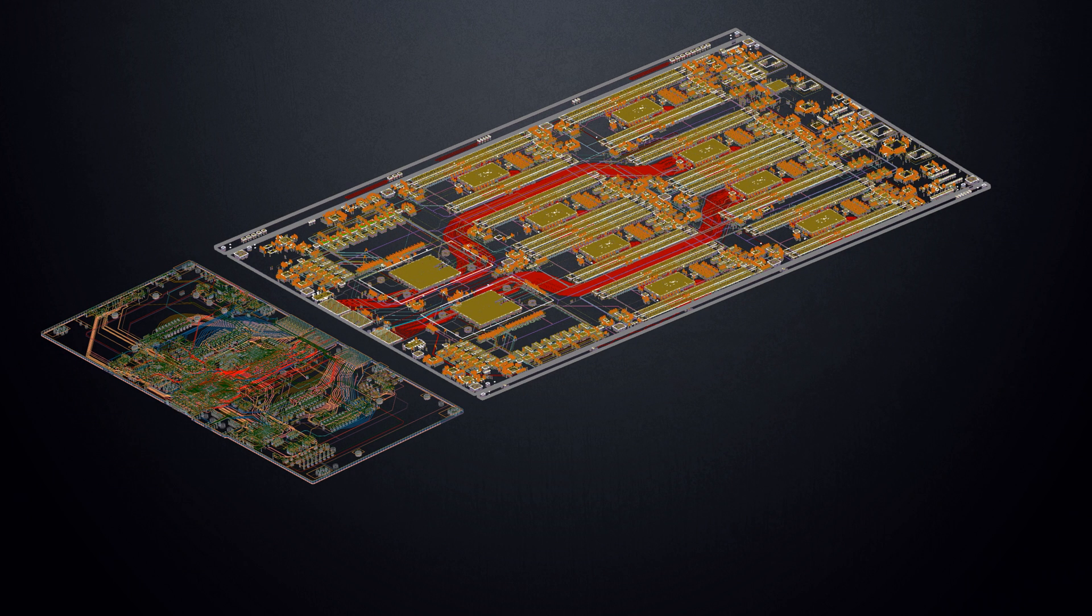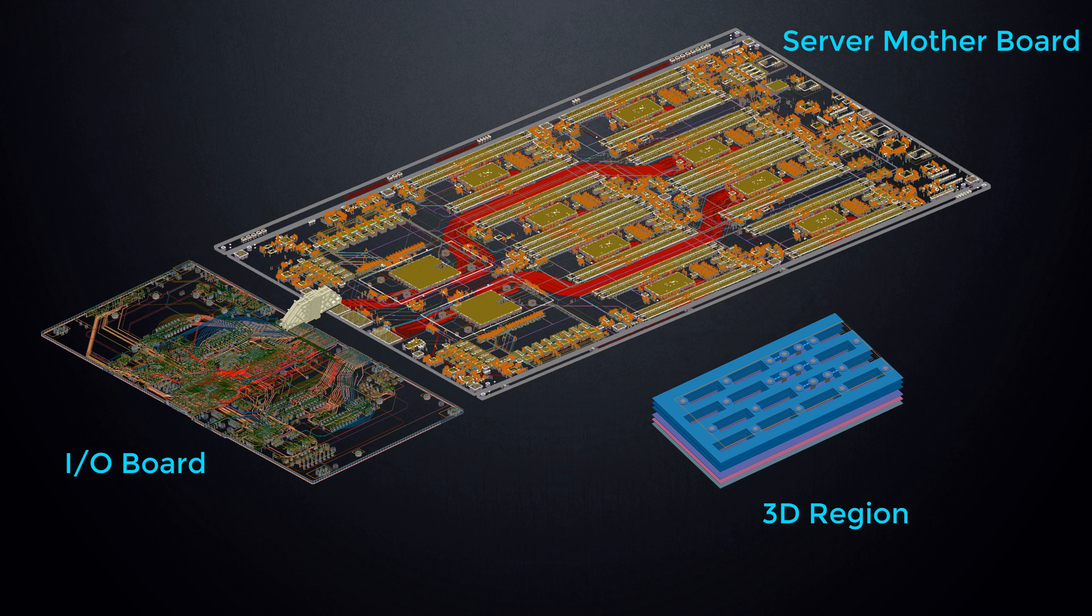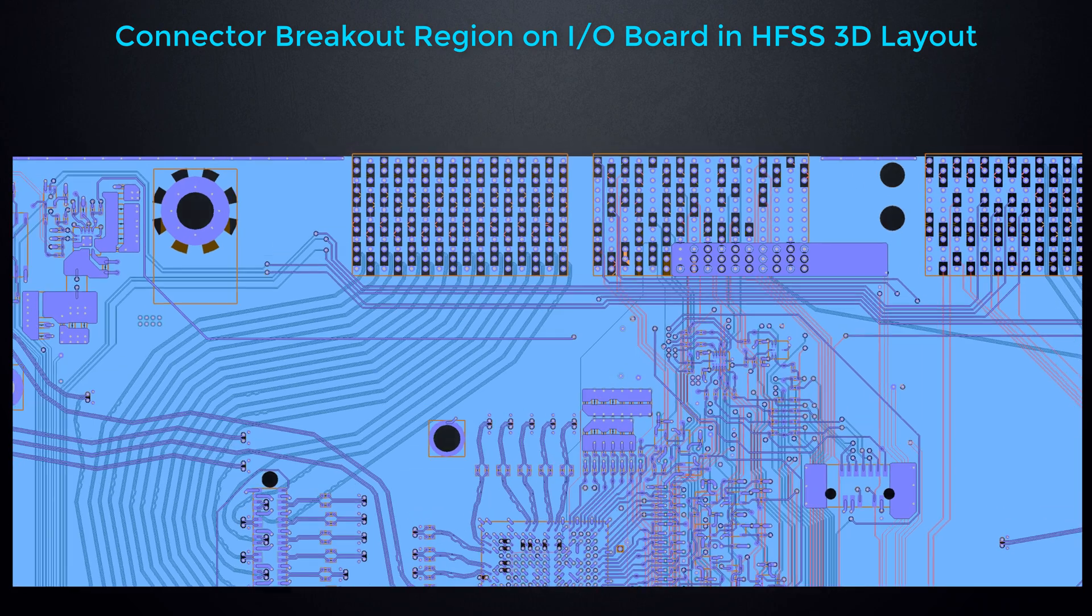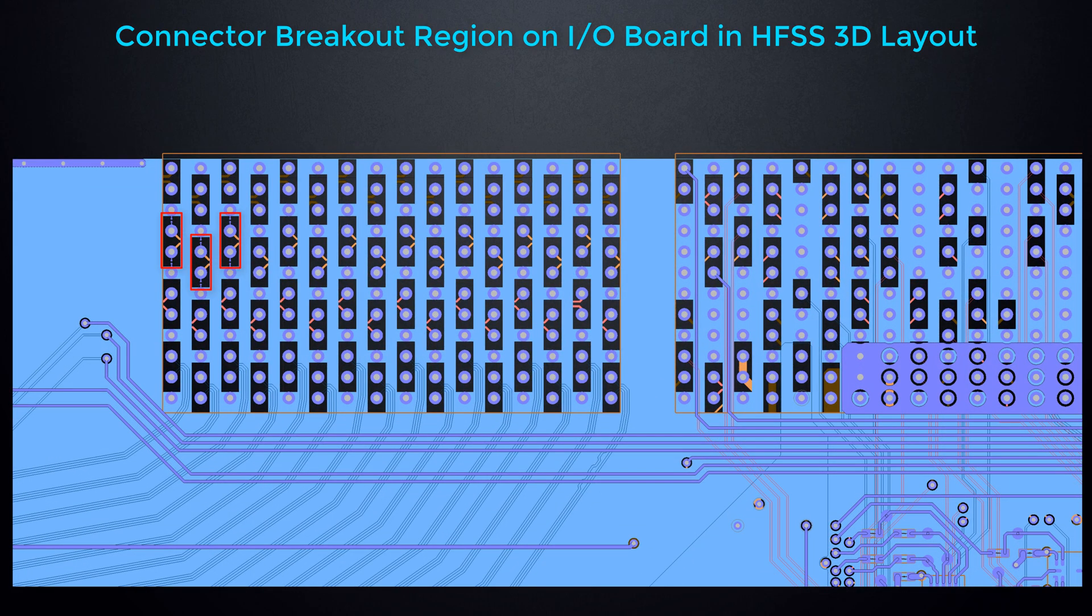For larger simulations, you can connect I/O boards to PCBs in HFSS 3D layout and invoke this feature. At the connector placement section of this I/O board, the signals travel through a dense via cluster.